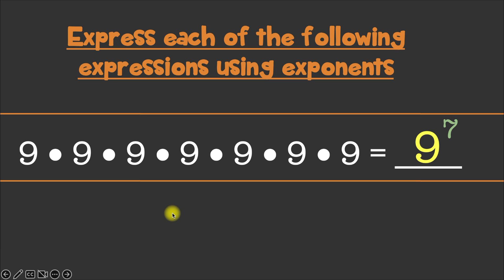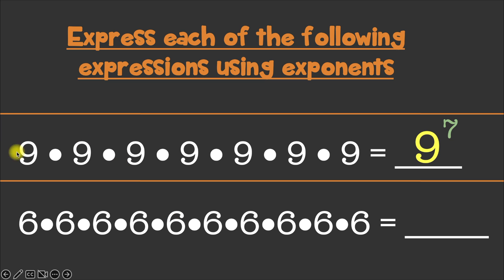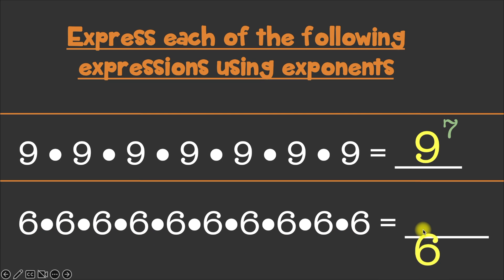And here's our last example. What if we had something written in expanded form like this? Now that's a lot of numbers. First of all, what would our base be? Well, the number being multiplied by itself is the number 6. So we'll write 6 as our base. And finally, how many times are we multiplying that base 6 by itself?